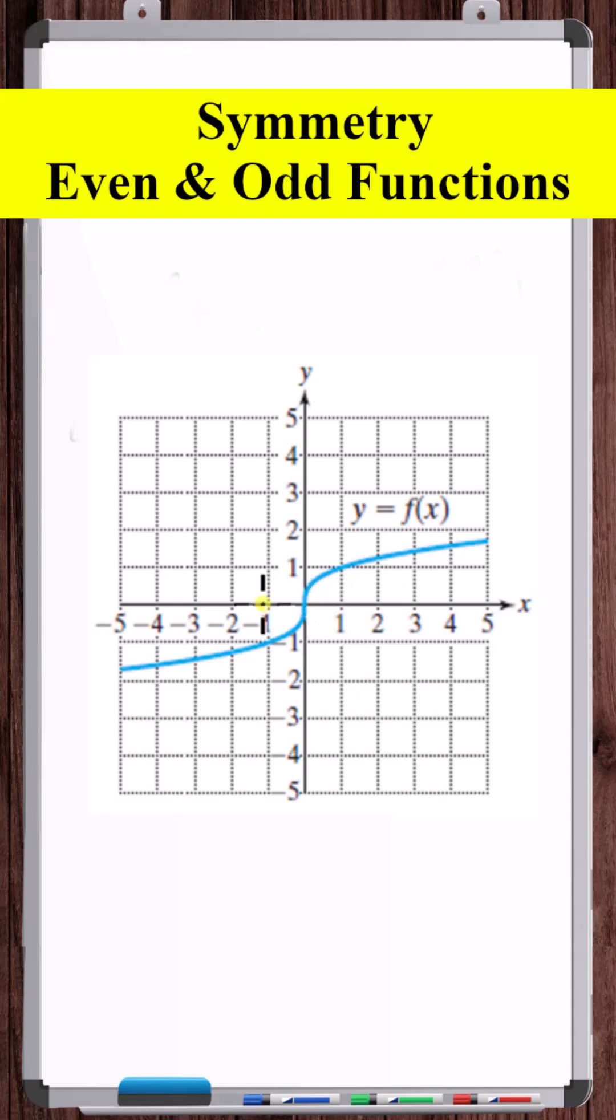x equals 1 and minus 1 don't give the same output, nor does y equal 1 or minus 1, but the point 1 comma 1 equals to the point minus 1 comma minus 1.